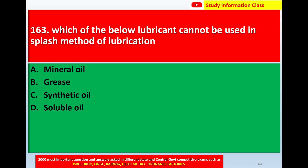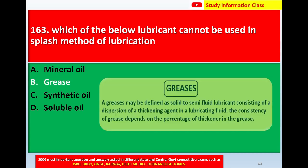Next, question number 163: Which of the below lubricants cannot be used in the splash method of lubrication? Option A mineral oil, option B grease, option C synthetic oil, option D soluble oil. Correct answer is grease. Grease may be defined as a solid or semi-fluid lubricant consisting of a dispersion of a thickening agent in a lubricating fluid. The consistency of a grease depends on the percentage of thickening agent. So correct answer is option B, grease.